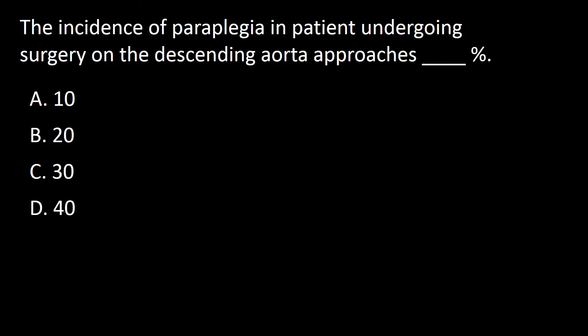The first question is: the incidence of paraplegia in patients undergoing surgery on the descending aorta approaches what percent? A: 10, B: 20, C: 30, D: 40.